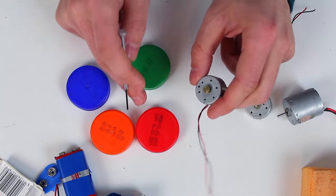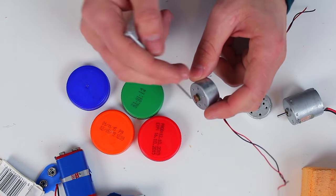First of all, we will make a hole in the middle of each cap and then glue them to the motors.